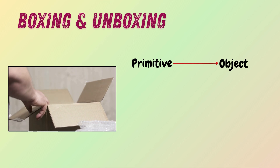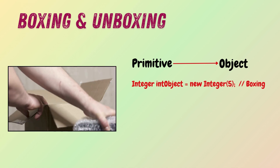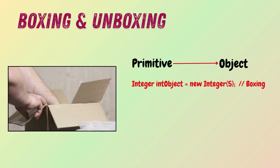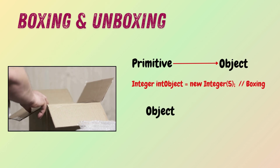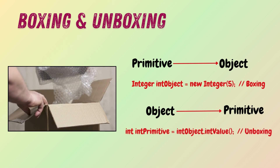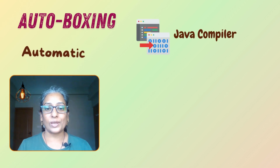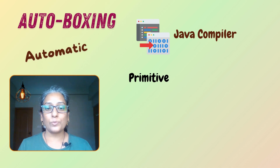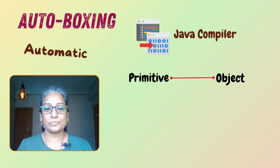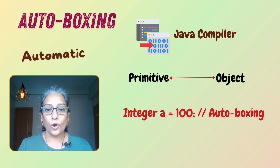Boxing is the process of converting a primitive data type into its corresponding wrapper class object, such as converting an int into an Integer. Unboxing is the reverse — converting a wrapper class object back into its corresponding primitive data type, such as converting an Integer back into an int. Autoboxing is the automatic conversion that the Java compiler makes between primitive data types and their corresponding wrapper classes.